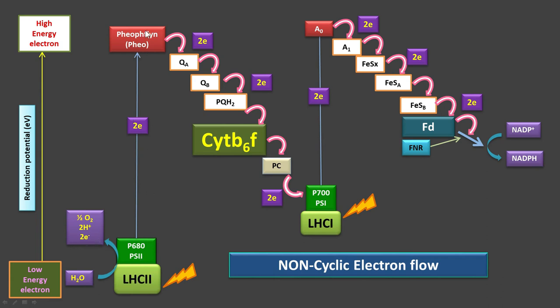This electron deficit at P680 compels water molecules to photo-oxidize, producing oxygen, protons, and electrons. These two electrons are taken by P680, and light resumes the non-cyclic electron flow. This flow is called non-cyclic because the electron released from P680 does not return — it is ultimately received by NADP⁺ to produce NADPH.